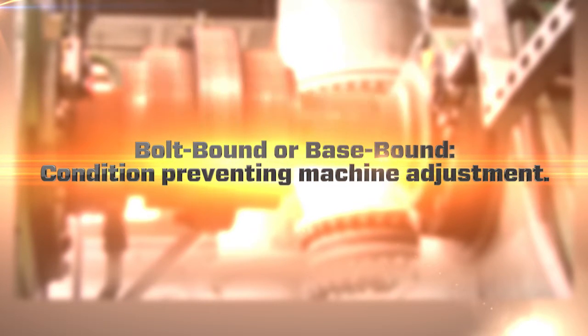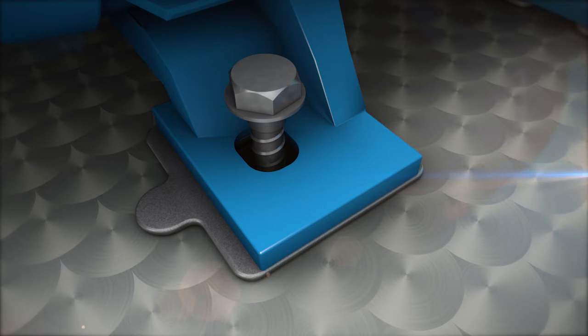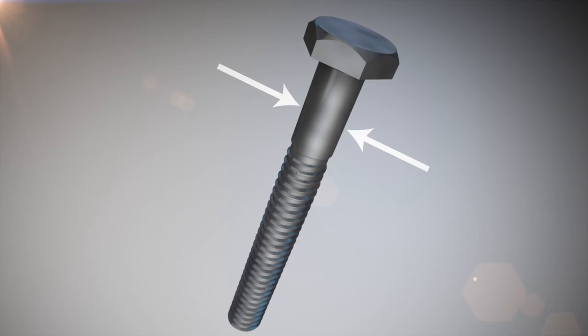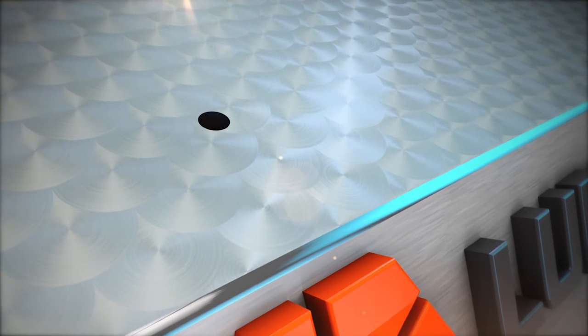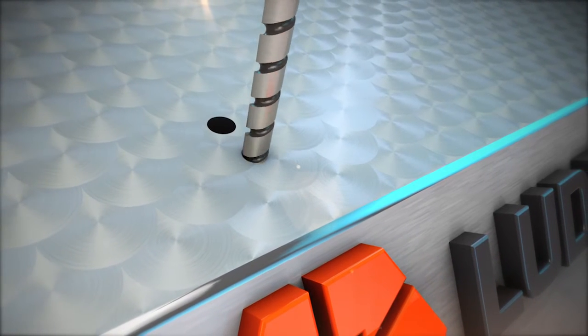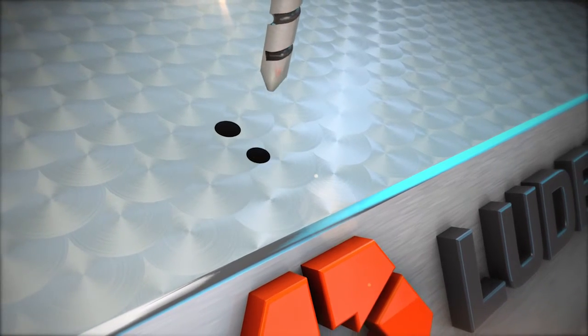Common solutions to being bolt bound are: increase the bolt hole size in the machine foot, reduce the shank diameter of the anchor bolt, drill and tap a new hole in the base, or make an optimal move, which is usually the best option because it saves time and does not require working on the structural components of the machine or its base.